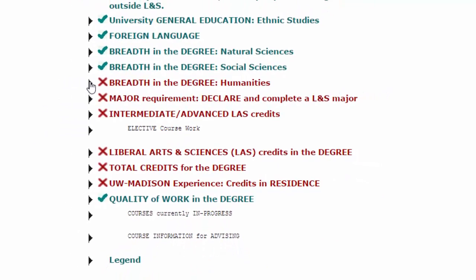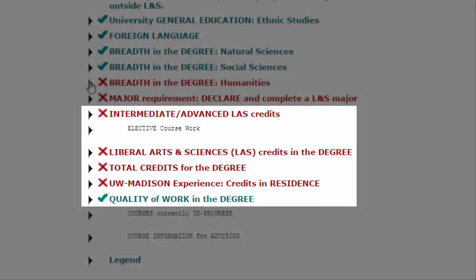After requirements for the major are listed, other requirements for the degree include: intermediate advanced credits, liberal arts and sciences credits in the degree, total credits in the degree, credits in residence, and quality of work in the degree.